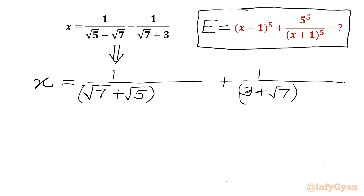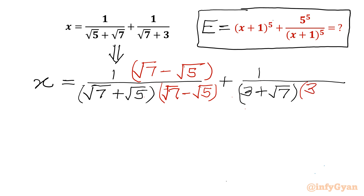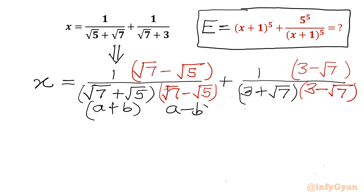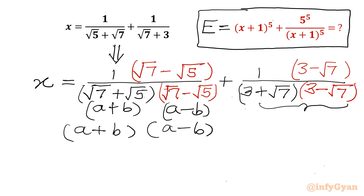Now I will use rationalization. For the first term, numerator and denominator will be multiplied with (√7 − √5). And for the second term, we will be multiplying numerator and denominator by (3 − √7). The denominator will be the difference of two squares — we can use the identity (a+b)(a−b) = a² − b².